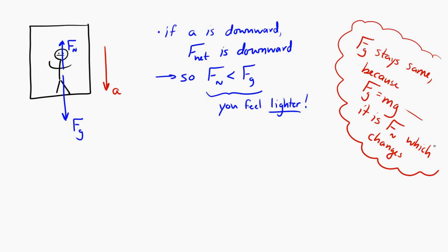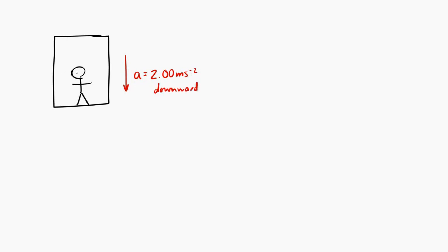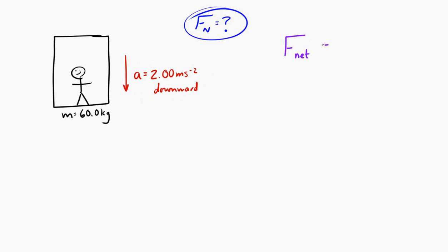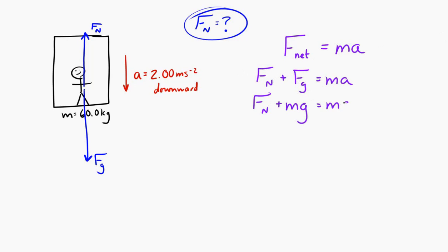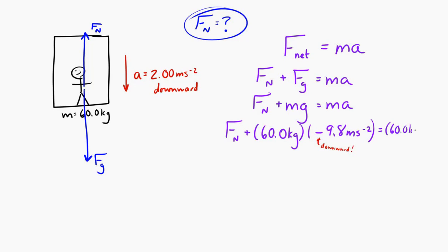Let's look at an example. An elevator is accelerating downward at 2 meters per second squared, and there's a person with a mass of 60 kilograms. We want to find the normal force on that person. This is a Newton's second law problem: F net equals ma. Adding the two forces, the weight equals m times g, so: Normal force plus (60 kg × −9.8 m/s²) = 60 kg × −2 m/s². Solving for the normal force gives 468 Newtons. The positive result means the normal force is 468 Newtons upward.